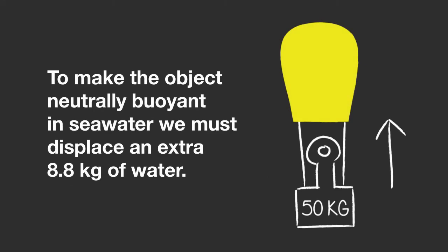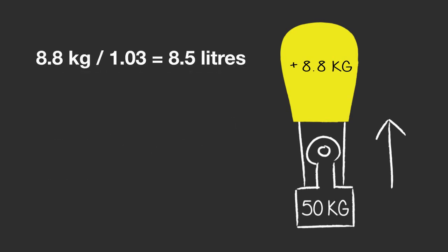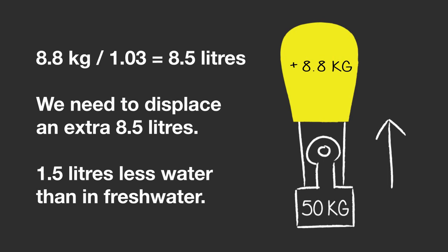Let's use our lift bag again. To make the object neutrally buoyant we must displace an extra 8.8 kg of water. How many liters is 8.8 kg of seawater? In freshwater it would be easy — you'd just say 8.8 liters. But that is not the case now, because 1 liter of seawater weighs 1.03 kg. So we divide by 1.03: 8.8 kg divided by 1.03 equals only 8.5 liters. So we need to displace an extra 8.5 liters — that's 1.5 liters less than in freshwater.